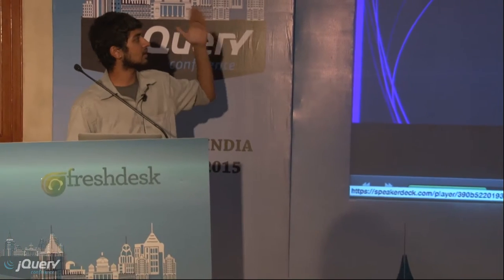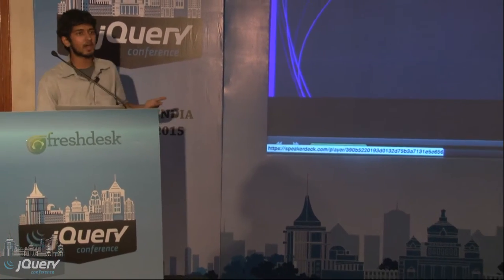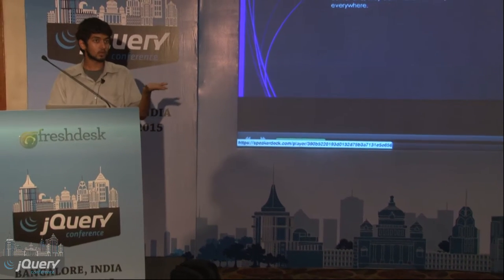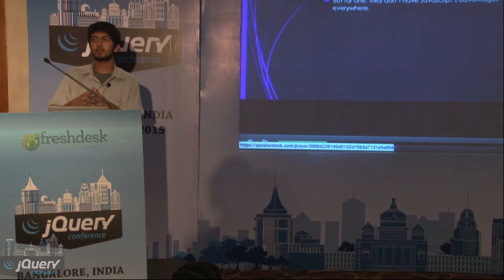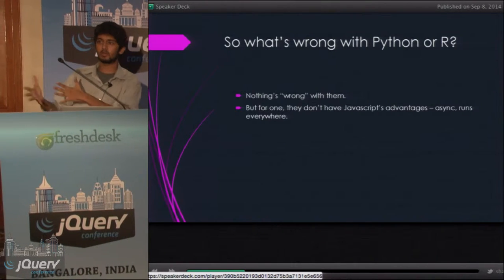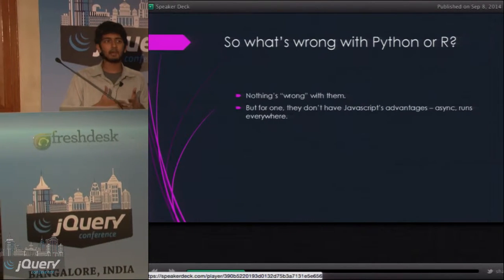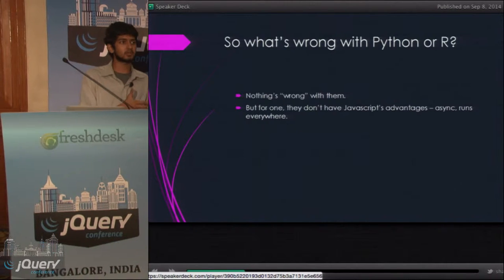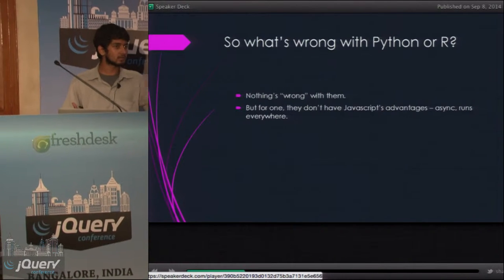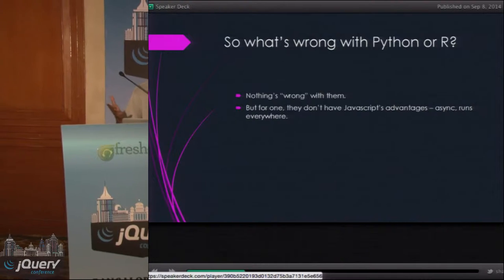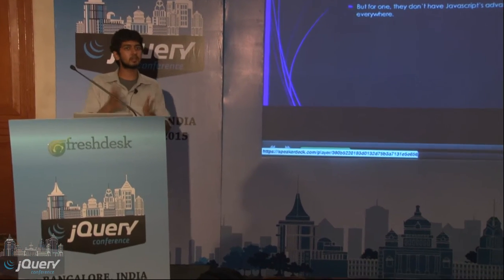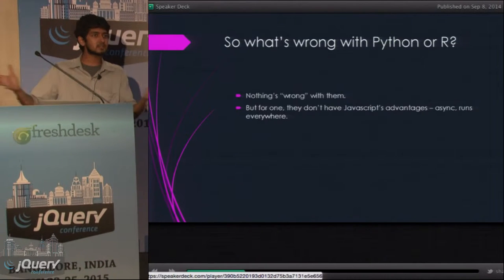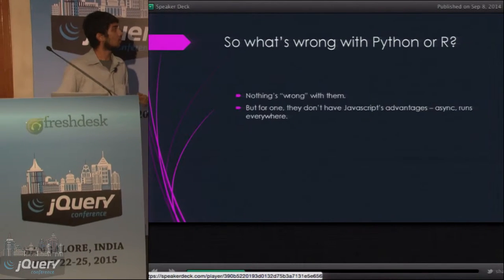Those advantages are: async, and that it runs everywhere. Python does have asynchronous extensions — there's Tornado that allows asynchronous computing — but it's not something that Guido van Rossum really thought about when he was designing the language. JavaScript, unlike other languages, runs everywhere. It runs on cameras, it runs on drones, it runs on the server, it runs inside a browser, in different contexts. It runs everywhere, unlike Python or R.